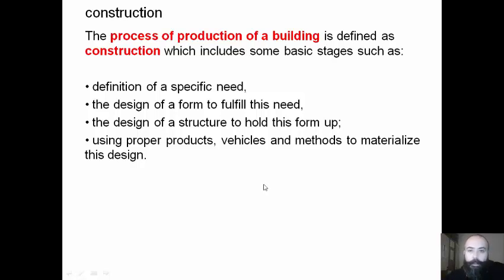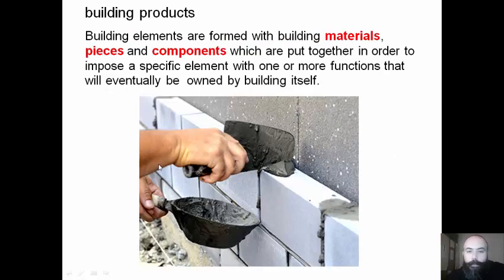Construction, however, is a process — the process of production of a building — and it has some basic stages. First of all, this process must start with a specific need. After that, we need to design a form to fulfill this requirement. We need to design a structure to hold this form up, and we need to use proper products, methods, and techniques to materialize this design. Building elements are formed with building materials, pieces, and components — these are the other levels of building products.